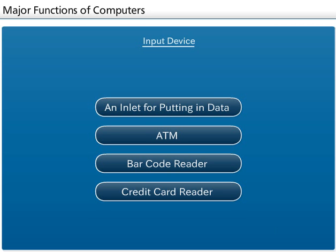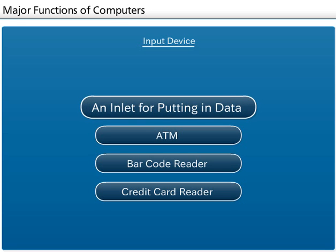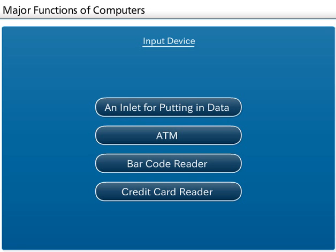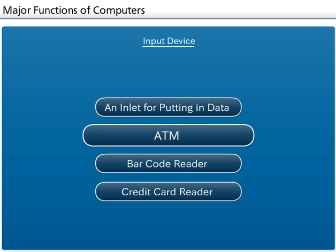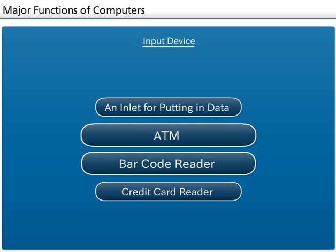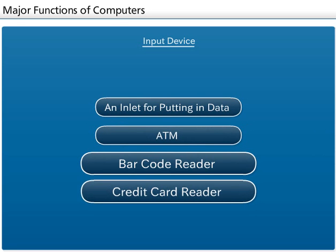Input Device: When we go close to a computer, the input device, which corresponds to an inlet for putting in data, is the device that we can see the easiest. In the use of computers that we talked about in this chapter, we mentioned the ATM, barcode reader, and credit card reader.